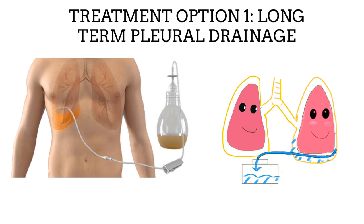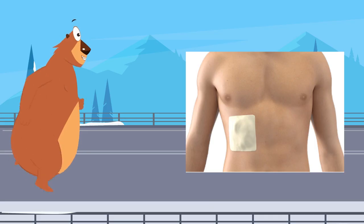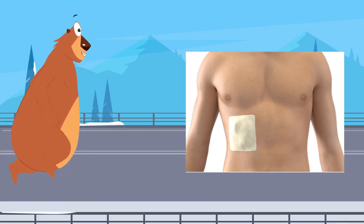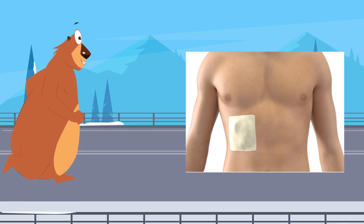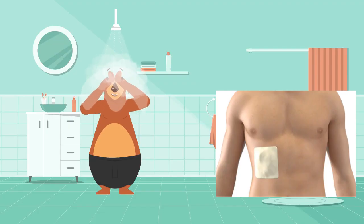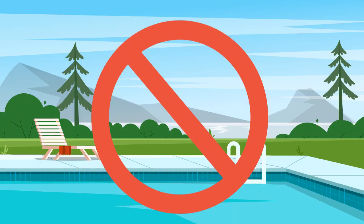The most common treatment option is long-term drainage by pleural catheter. This catheter is a soft, small, long catheter that inserts into the chest to drain the fluid. The catheter will then be buried under the skin to prevent the risk of infection. It will be covered by a dressing, and most patients maintain their regular activities without any limitation. They can also take a shower; however, it is not advised to immerse the body in water or do activities such as swimming.